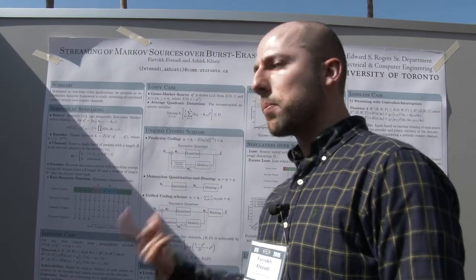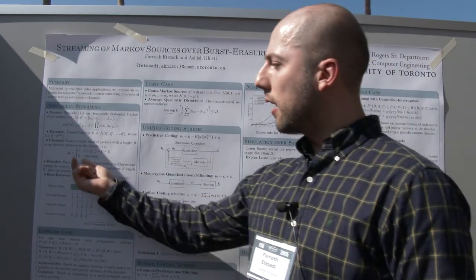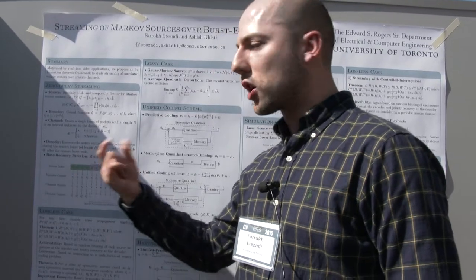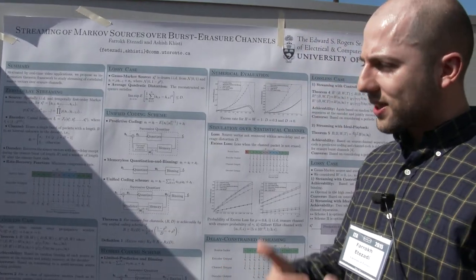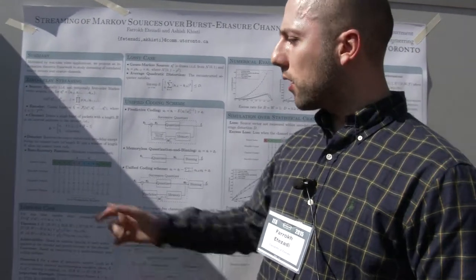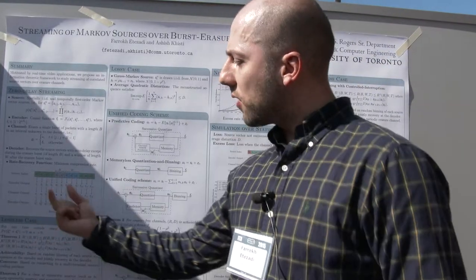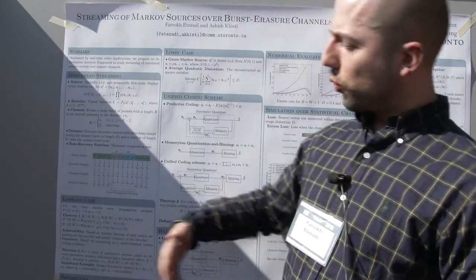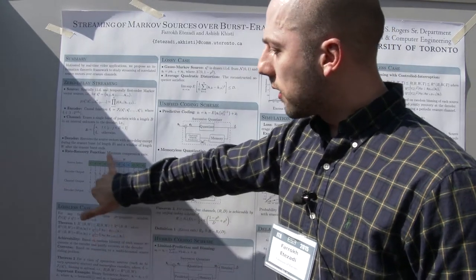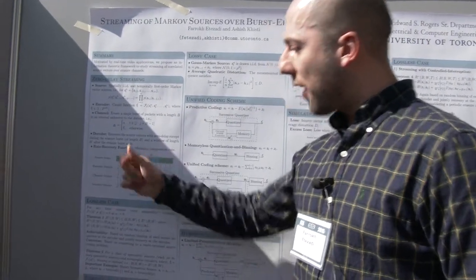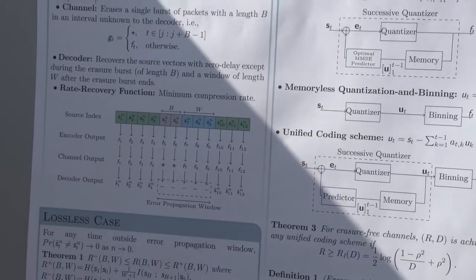The channel we consider is a very simplified version, which is a single burst erasure channel that introduces a burst erasure of length v in an unknown location to the encoder. The decoder is required to reconstruct the sources within zero delay and within a specific distortion constraint. As we can see here, when the erasure happens, the decoder will not be able to reconstruct the sources with zero delay. However, after a window of length w after the burst, it will recover the sources and get back to zero delay recovery.